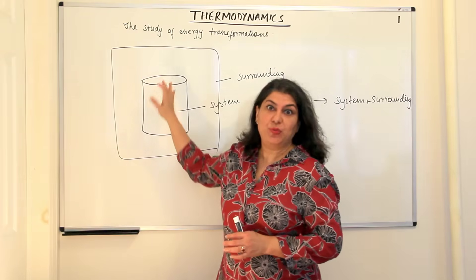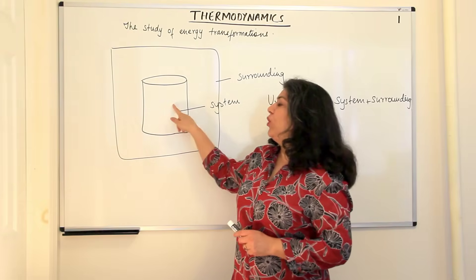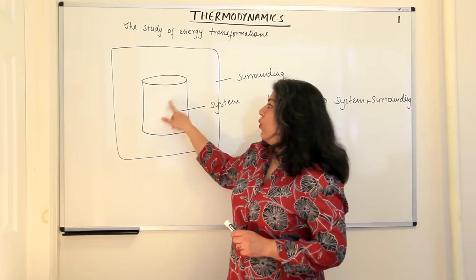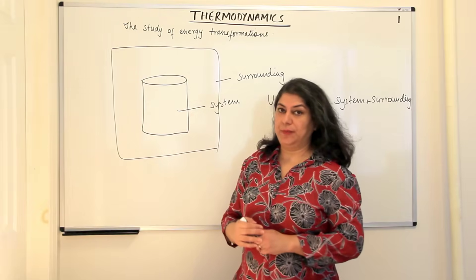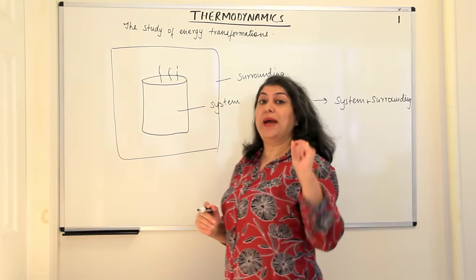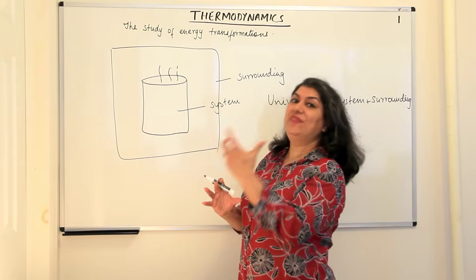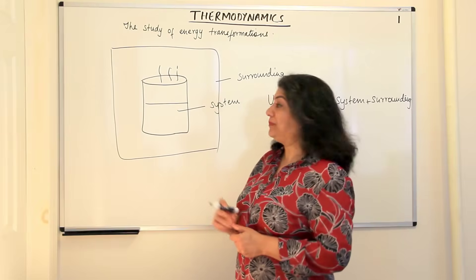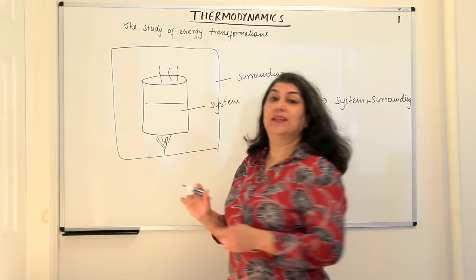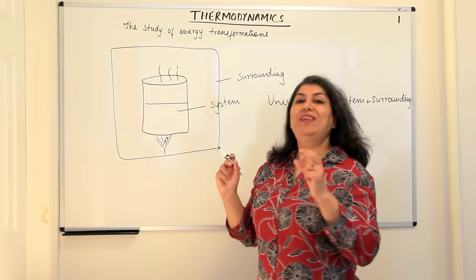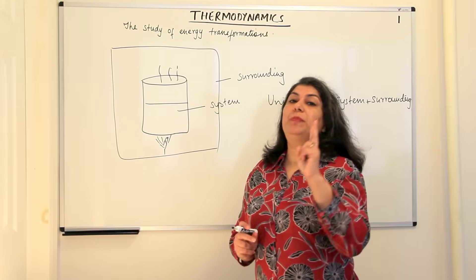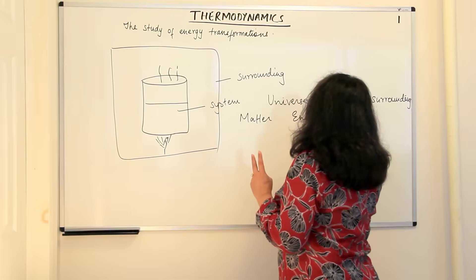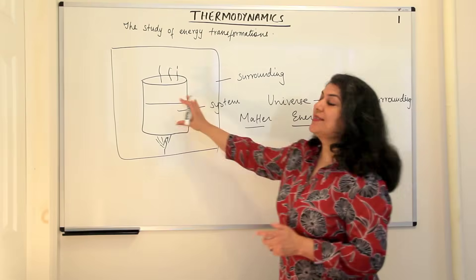The system can exchange matter with the surroundings. For example, if water is boiling in the beaker, heat goes in and water vapor evaporates out — matter leaves the system. Also, you are heating it up, so energy can enter or leave the system. So when we classify systems, we keep in mind two things: matter and energy. On the basis of what the system can exchange, we can classify systems into three types.